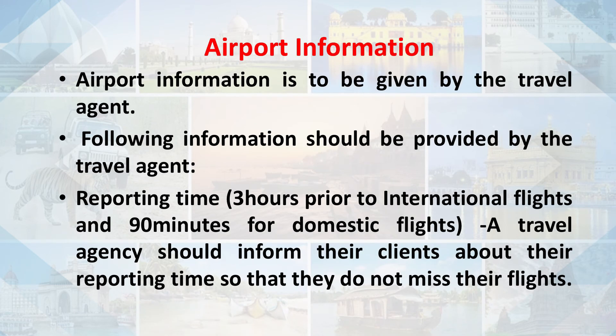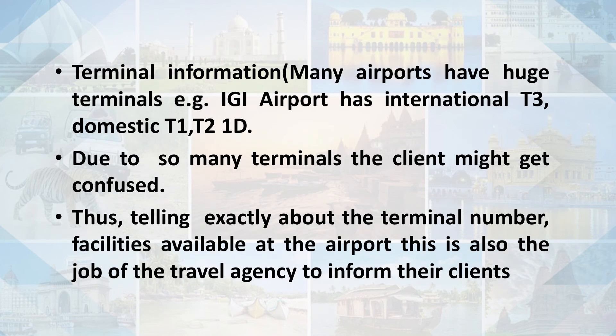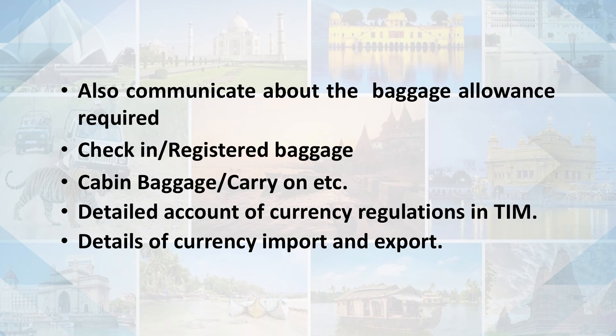Airport information is also provided by the travel agency, including reporting times — 3 hours prior for international flights and 90 minutes for domestic flights — so clients do not miss their flights. Terminal information is also important, as large airports like IGI Airport have multiple terminals such as T3 (international), T1, T1D, and T1C. The travel agency should inform clients about which terminal to use, facilities available, check-in for registered baggage, and cabin baggage carry-on rules.